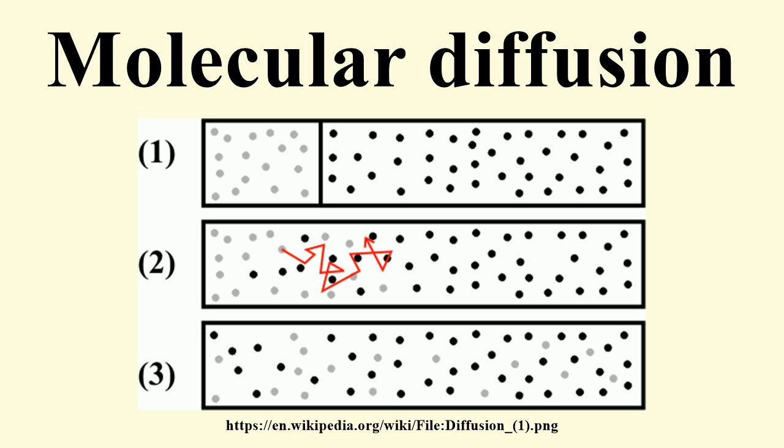Once the concentrations are equal, the molecules continue to move. But since there is no concentration gradient, the process of molecular diffusion has ceased and is instead governed by the process of self-diffusion, originating from the random motion of the molecules.